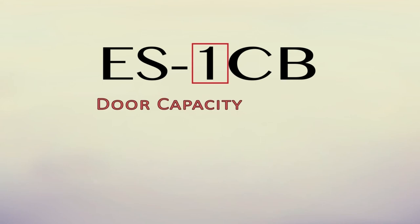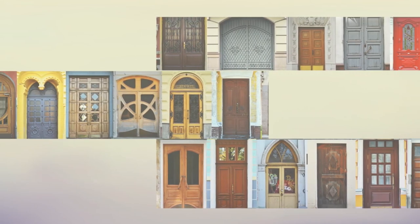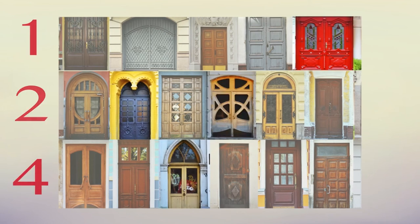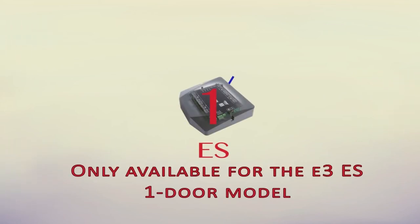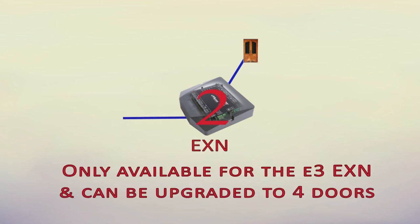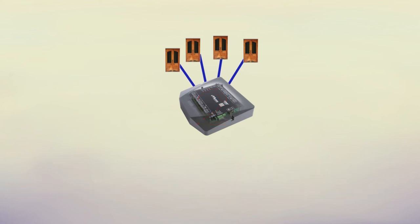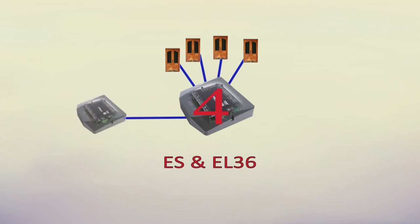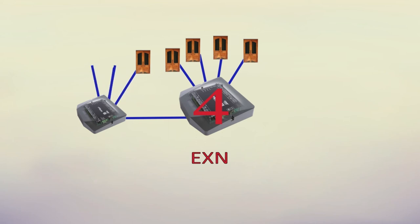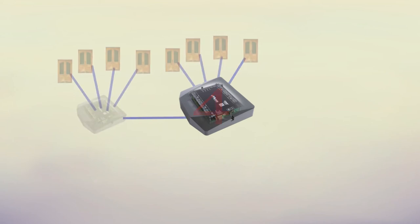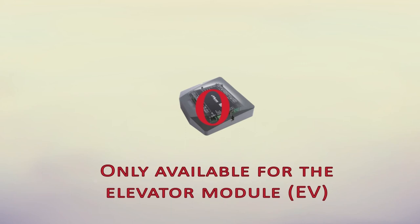Part two of the model number specifies the door capacity for the individual module being purchased. The three options are one, two, and four doors. The one-door option is only used and available for the E3 Essential one-door controller model. Select the number two if you desire a two-door capacity expansion node that can be upgraded to four doors at a later date. Select the number four if you are ordering the four-door capacity E3 Essential, or ES model, or the Elite 36 model, or EL36. You can also select the number four when ordering a four-door capacity expansion node. In more rare scenarios, you may choose the number zero for the elevator module.